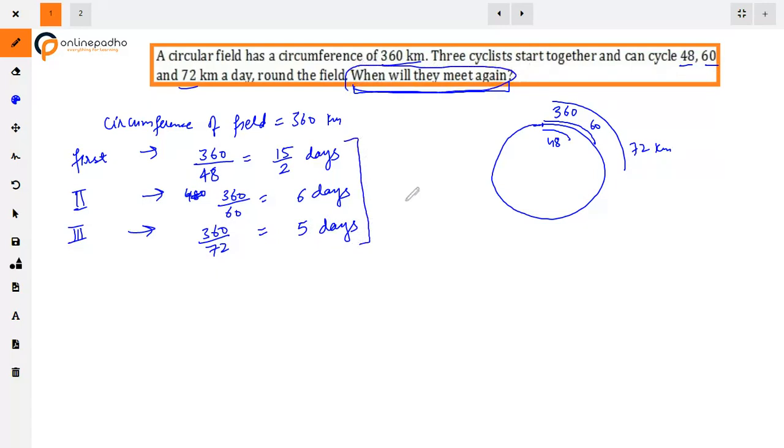Now what do we do? We find the LCM of these durations. If we find the LCM of these days, we will get the answer. For this type of question—traffic lights, walking steps, or similar problems—we find the LCM.